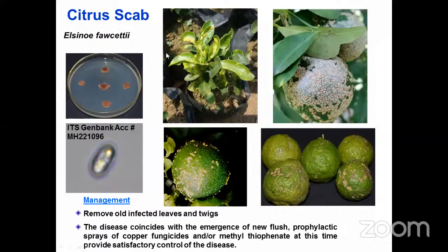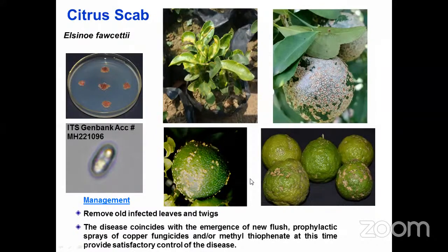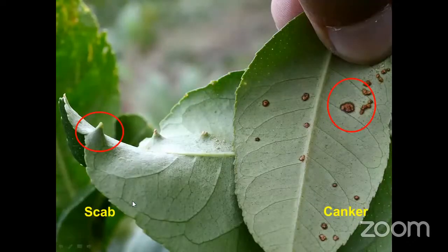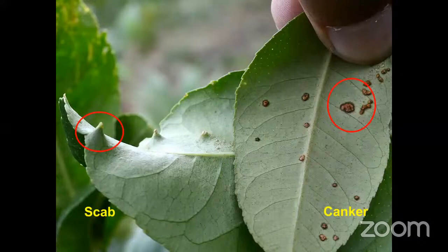Another infection is citrus scab, caused by Elsinoe fawcettii. Typical cultures can be seen in culture media, and scabby lesions are found especially on Rangpur lime rootstock, which is the most susceptible species for scab infection. The disease generally coincides with emergence of new flush, so prophylactic sprays of copper fungicides or mancozeb can be used, along with removal of old infected leaves and twigs. Some symptoms are confusing — it can be difficult to distinguish between scab infection and canker infection.